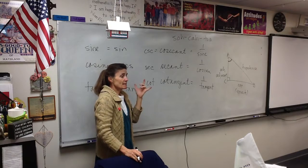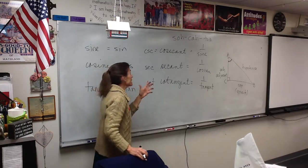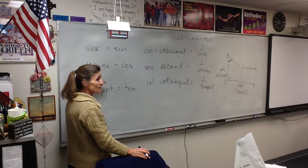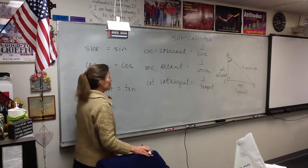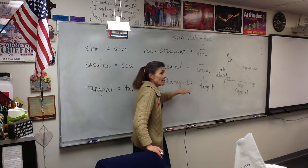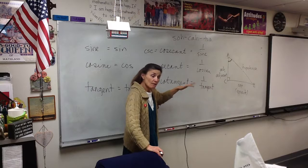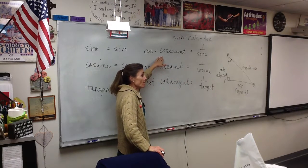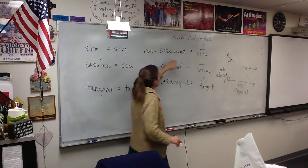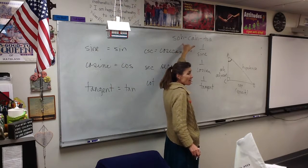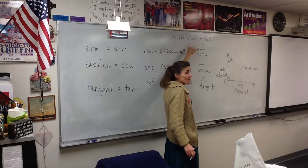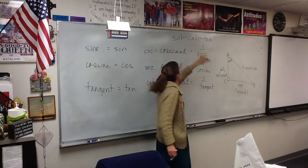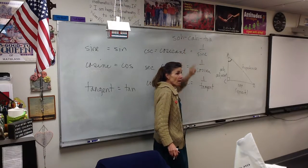Now, somebody might say, okay, Mrs. Ford, that's great. That covers sine, cosine, and tangent. What do you do about these guys? You flip them. If you remember that cosecant is the reciprocal of the sine, and you know that sine is opposite over hypotenuse, then what does cosecant have to be? Hypotenuse over opposite.